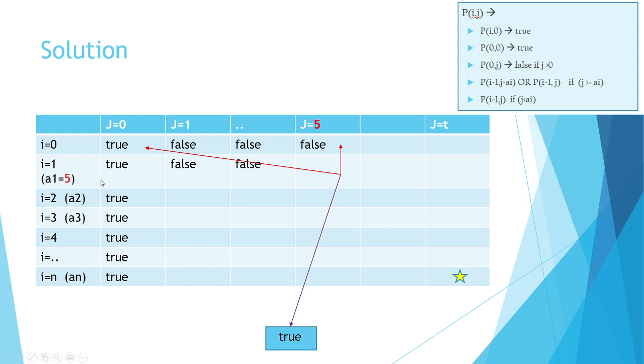The order of the algorithm, as was asked in the problem, is O(nt) because you have n numbers on this side and t values on this side. Overall, the solution is arrived at in order nt.